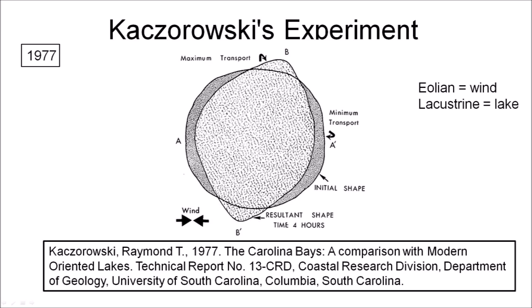In 1977, Raymond Kaczorowski conducted an experiment to test the hypothesis that the Carolina Bays were oriented lakes like those found in Alaska. He carved a circular indentation on a sand tray that he filled with water to represent the model lake. He set a fan to blow over the water and he changed the fan to blow on opposite directions every 15 minutes for 4 hours. The experiment produced a pointy structure that was not elliptical. Kaczorowski's report was never subjected to peer review, but it has been frequently cited by proponents of the wind and wave mechanism also called the Aeolian-Lacustrine Hypothesis.